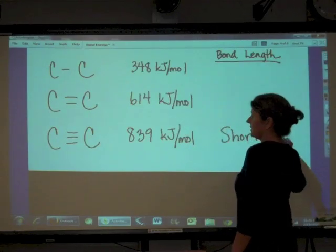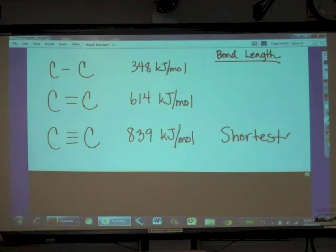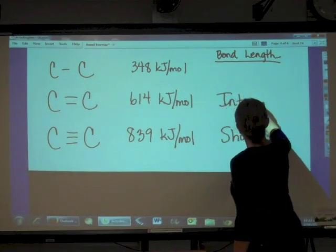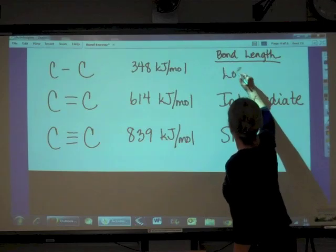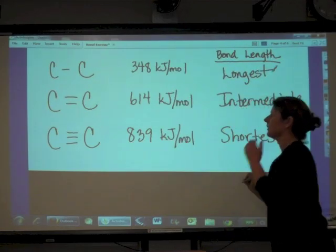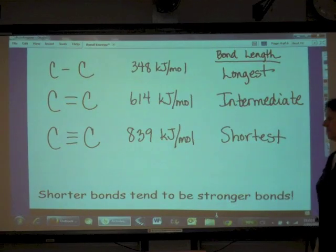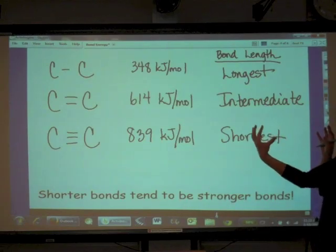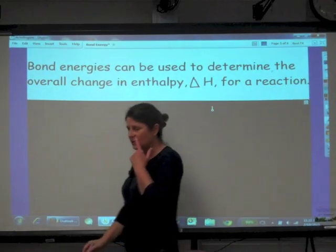Meaning that the distance, clearly I did not do these to scale, the distance between carbon-carbon here is the shortest in this triple bond. The carbon-carbon double bond, that is the intermediate length. And the carbon-carbon single bond is going to be the longest. And in general, shorter bonds tend to be stronger bonds. And you know that shouldn't surprise anybody because the force of attraction is going to be greater when the distance between the two attractive bodies is closer.